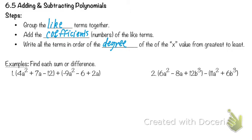All right, so we're going to use these steps and find each sum or difference. Notice, if I covered up the second half of this, '4a squared plus 7a minus 12' just looks like a normal polynomial — a trinomial with three terms in standard form. The second parenthesis also looks like a normal trinomial. But what are we doing with these two trinomials? We're adding them.